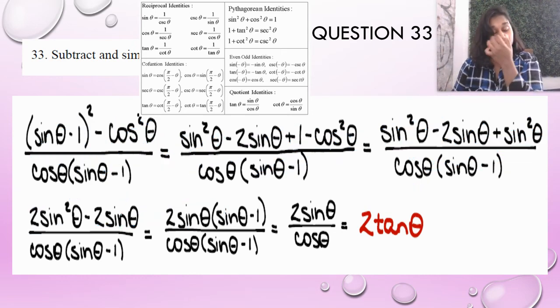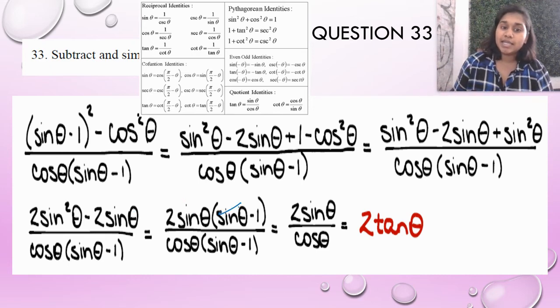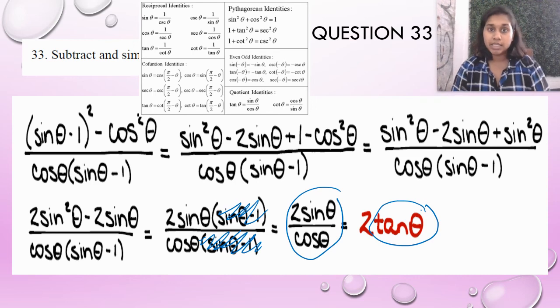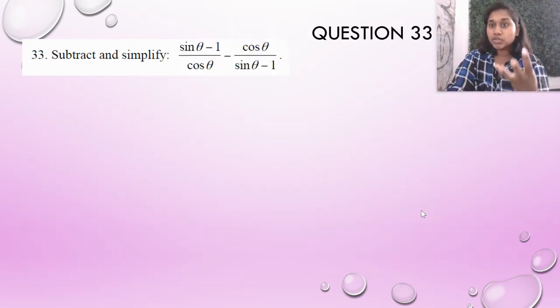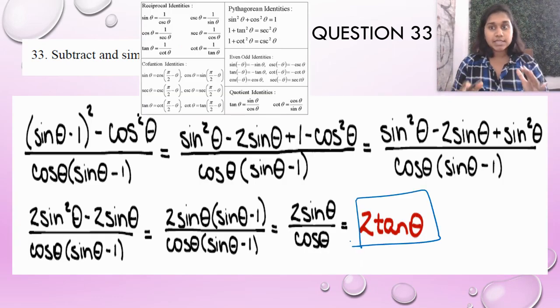This sine theta minus one and this sine theta minus one are going to disappear. You're just left with 2 sine of theta over cosine theta, and sine theta over cosine theta is tangent. So I have simplified this fully chaotic original statement into just 2 tan theta.